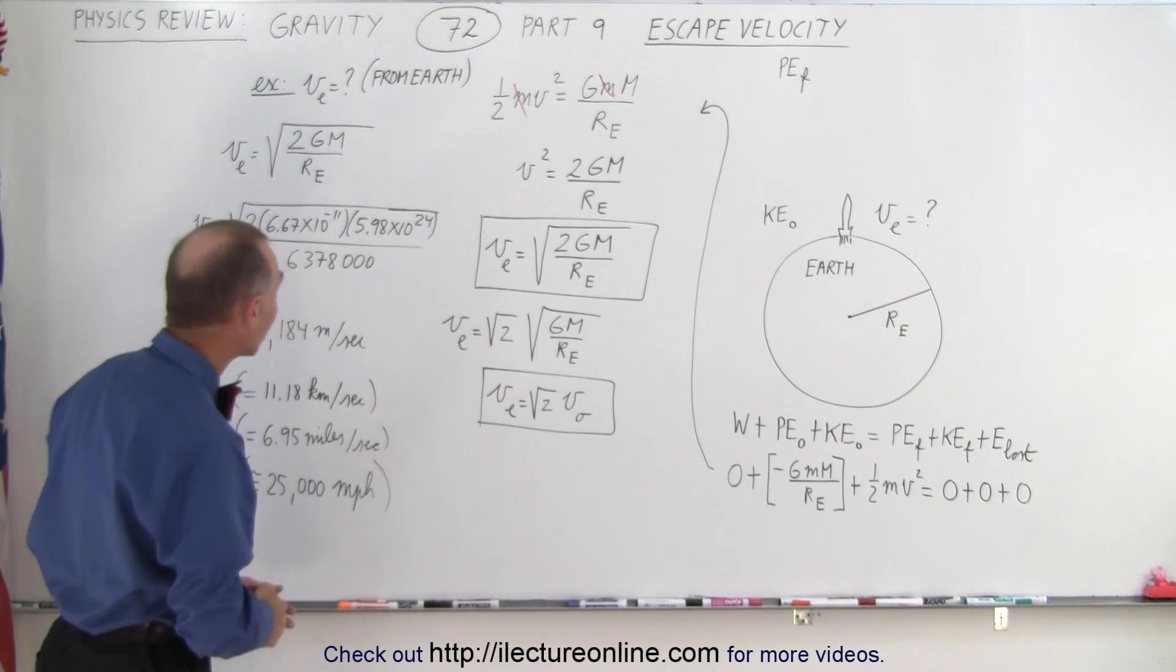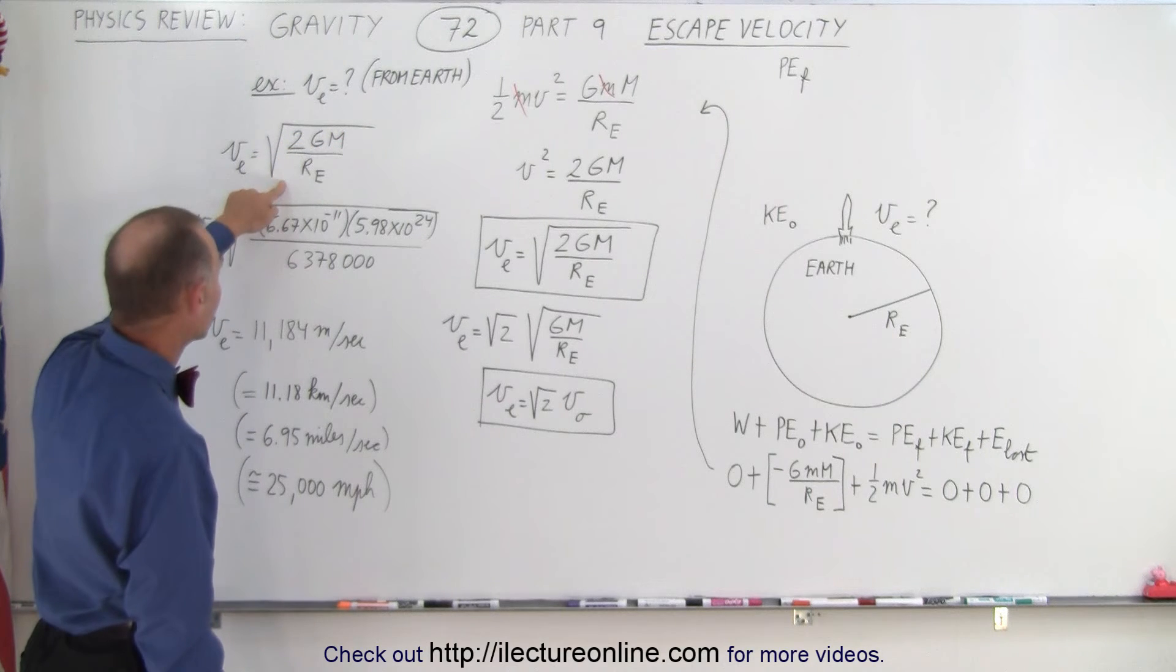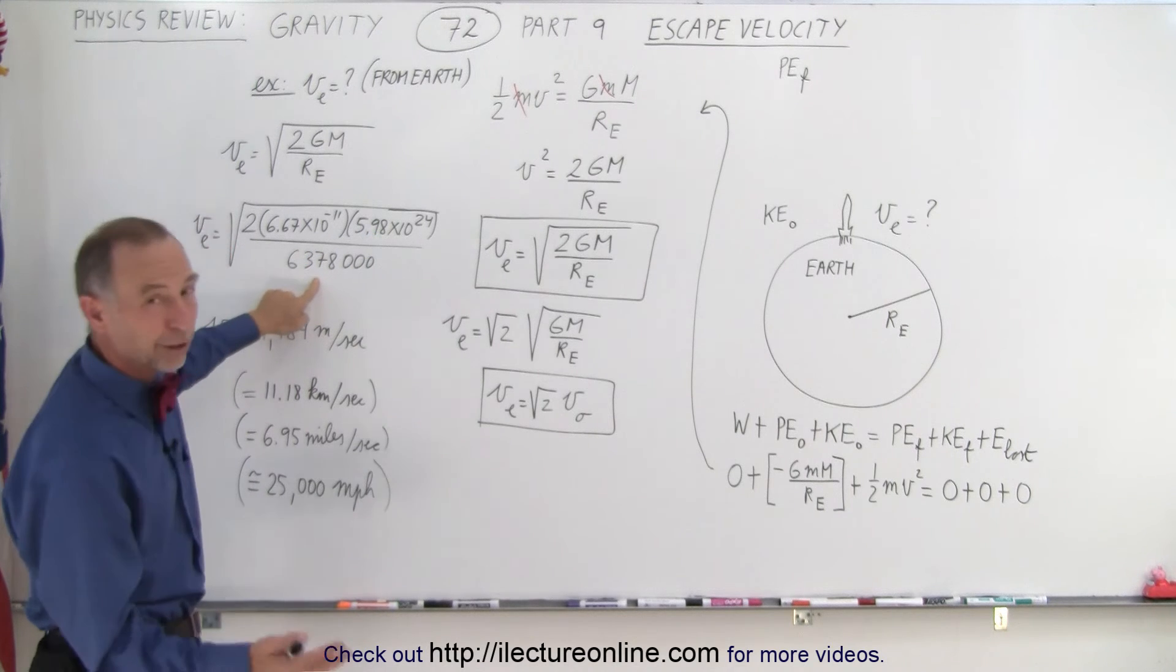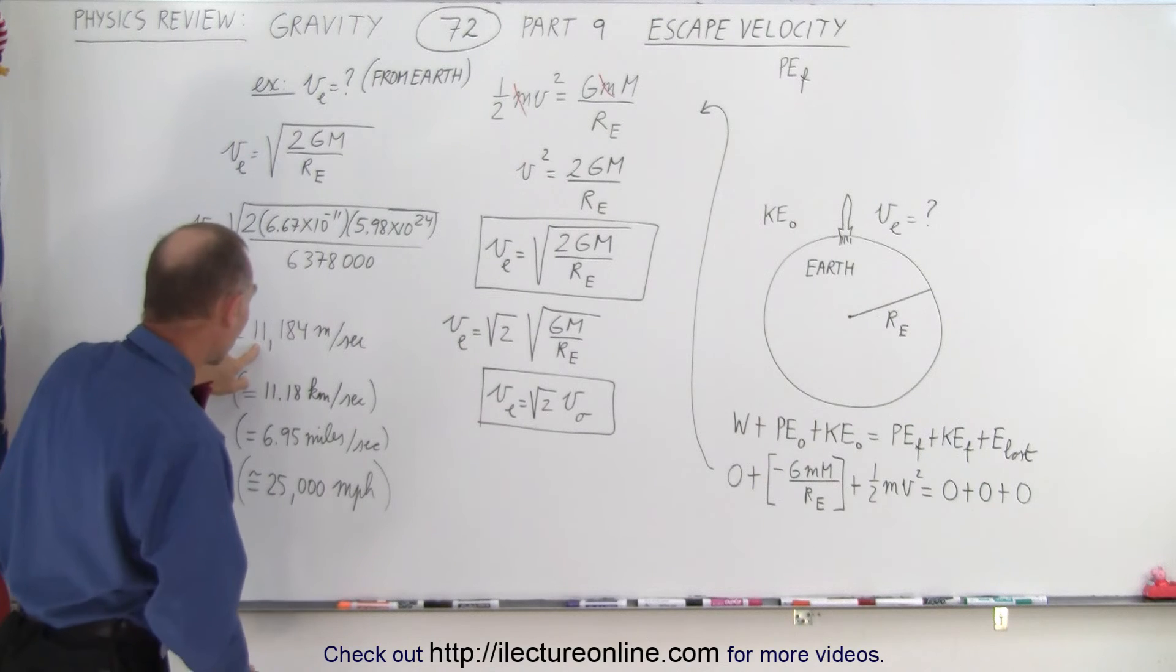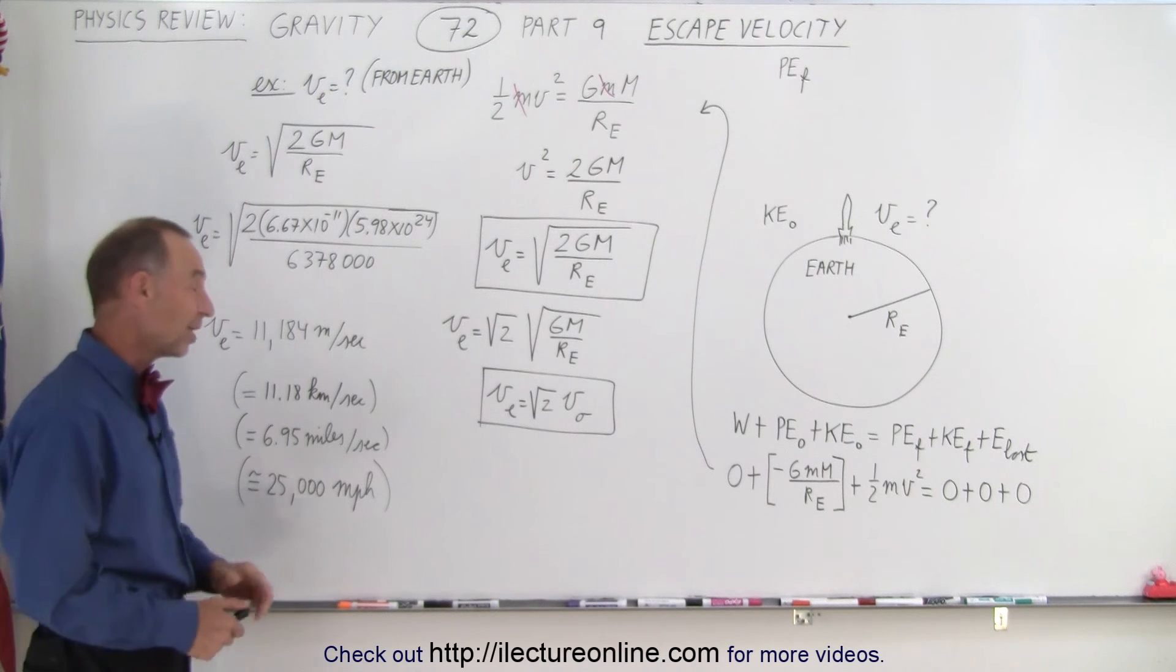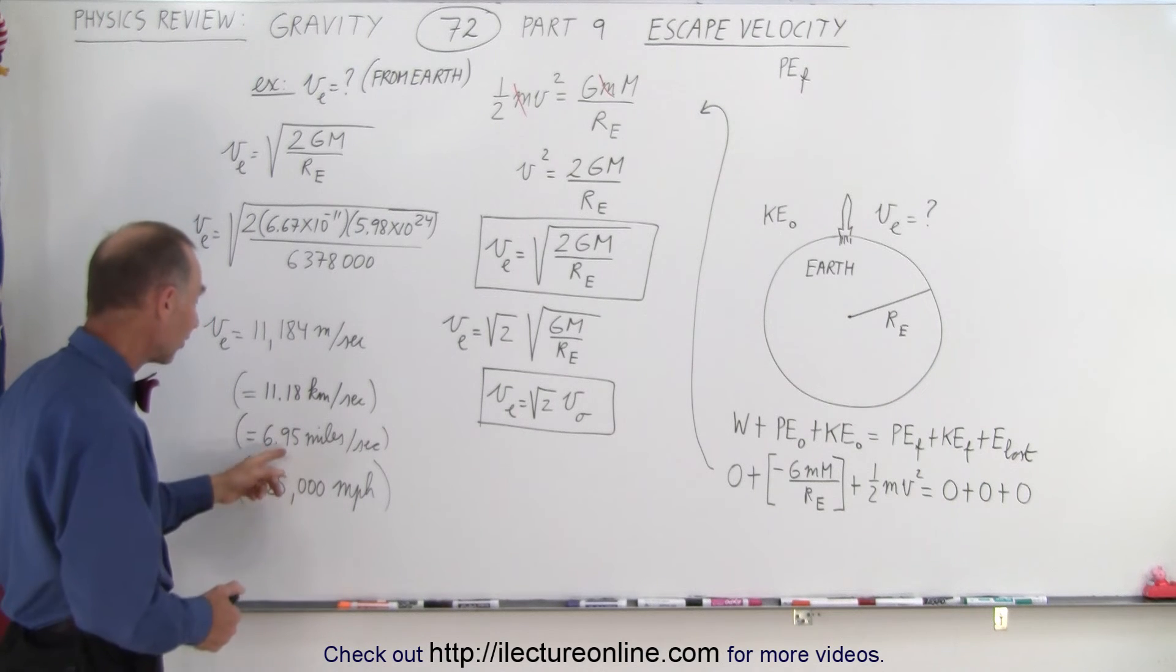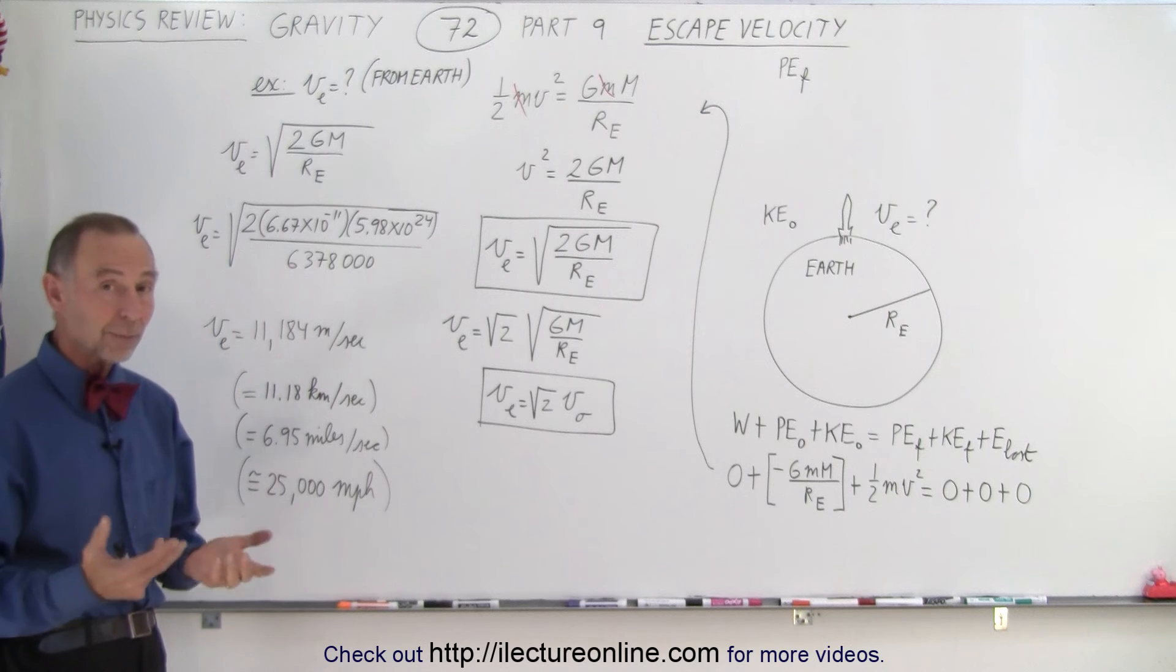As an example let's say what is the escape velocity necessary to get away from the Earth? You use your equation, you plug in g, you plug in the mass of the Earth, you plug in the radius of the Earth assuming you start from the surface of the Earth and that means you need the speed of a little bit over 11,000 meters per second which is a little bit over 11 kilometers per second or almost 7 miles per second. That equates to about 25,000 miles per hour.